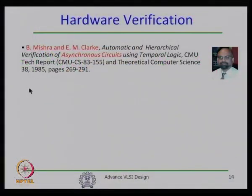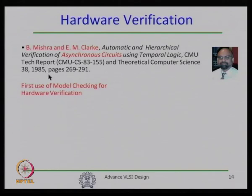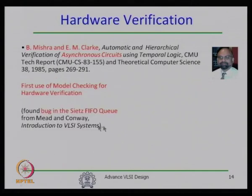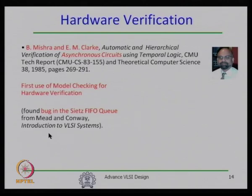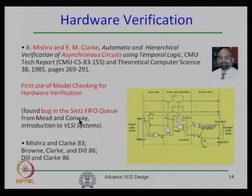Hardware verification using model checking was first exercised by Misra and Clarke from CMU in 1985. Though the model checker was developed in 1981, it was initially applied to software verification. Misra and Clarke applied it to hardware, verifying the FIFO implementation from the Mead and Conway book — a standard reference in VLSI design — and discovered a bug in that FIFO implementation. This was the first instance of hardware verification using a model checker.